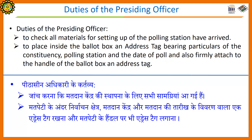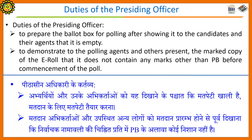Duties of the Presiding Officer include: checking all materials for setting up of the polling station have arrived; placing inside the ballot box an address tag bearing particulars of the constituency, polling station and the date of poll, and also firmly attaching to the handle of the ballot box an address tag; and preparing the ballot box for polling after showing it to the candidates and agents that it is empty. Also, demonstrating to the polling agents and others present the marked copy of the electoral roll that it does not contain any marks other than postal ballot before commencement of the poll.